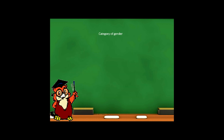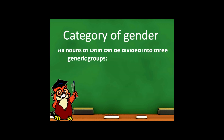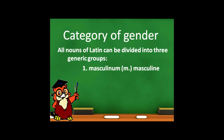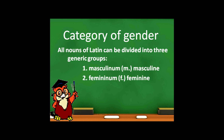Category of gender. All nouns of Latin can be divided into three generic groups: masculinum – masculine, femininum – feminine, neutrum – neutral.